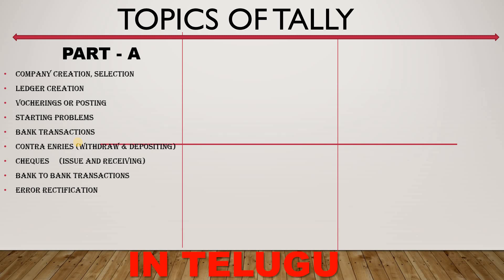We will be doing bank-to-bank transactions. For example, if you have a 50,000 bank entry but by mistake you entered 1 lakh, you need to rectify it. This is error rectification — if you are able to rectify the 1 lakh entry, we will correct it.